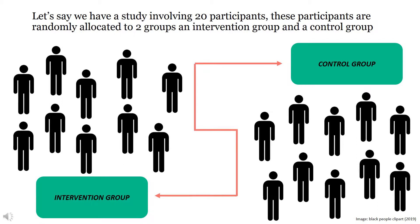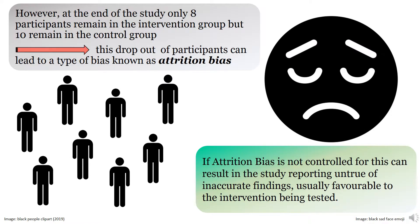Let's say we have 20 participants assigned to a study. They're randomly allocated 10 to each group — an intervention group and a control group. However, at the end of the study, 10 people remain in the control group, but only 8 remain in the intervention group.